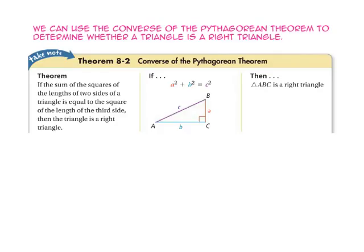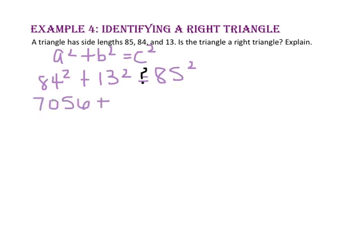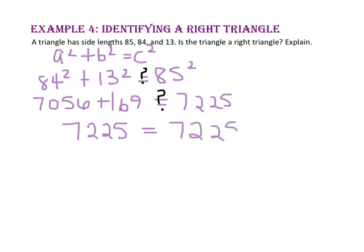We can use the converse of the Pythagorean Theorem to determine whether a triangle is a right triangle. If the sum of the squares of the lengths of the two shorter sides equals the square of the length of the longest side, then the triangle is a right triangle. In example 4, we will identify a right triangle. A triangle has side lengths 85, 84, and 13. Is it a right triangle? We know the longest side is the hypotenuse, so let's use 85 as c and 84 and 13 as a and b. 84 squared is 7056, 13 squared is 169, and 85 squared is 7225. 7056 plus 169 equals 7225. Since 7225 equals 7225, a squared plus b squared equals c squared, so the triangle is a right triangle.